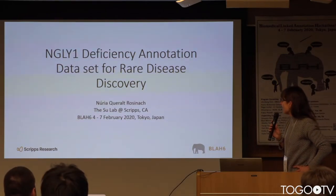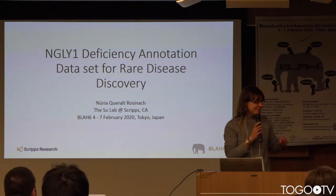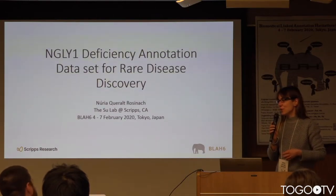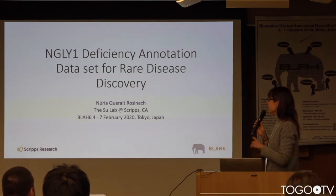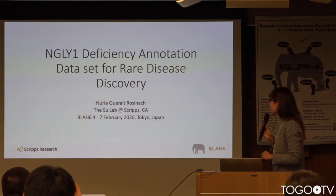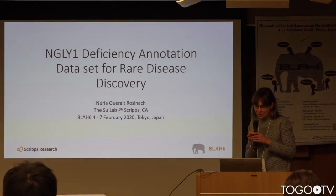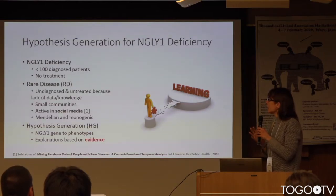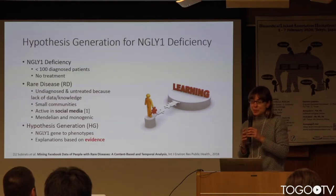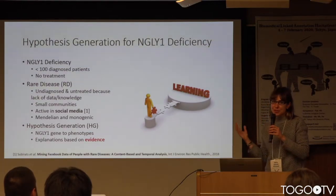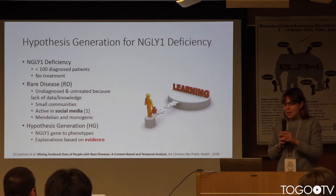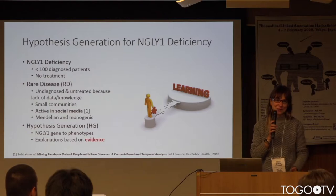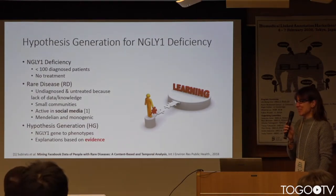I'm going to present a proposal that started in a prior hackathon, working with Dindong. The project is in the context of work I did in my last position as a postdoc at Scripps Research in California. It started in the context of supporting and working in collaboration with domain experts in hypothesis generation for a specific rare disease called NG1 deficiency. It's not very focused on social media mining, but I did my best to connect the proposal to the focus of the plan.